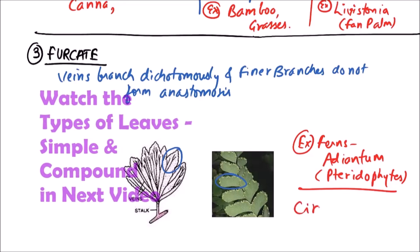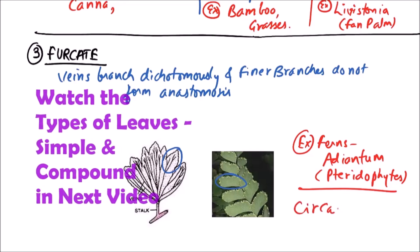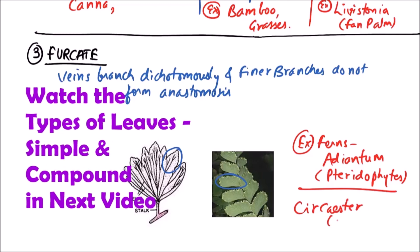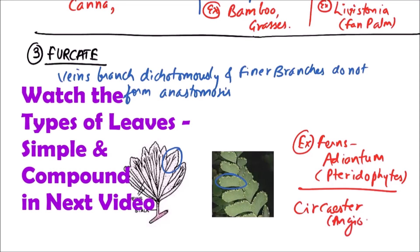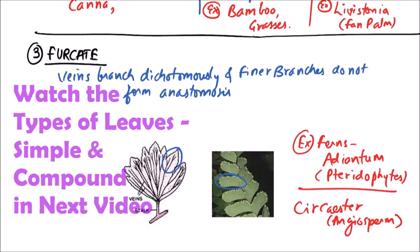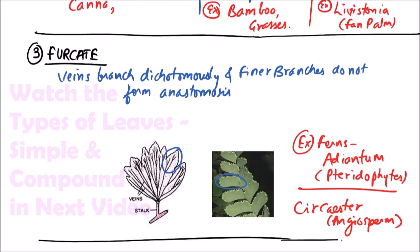Which include Circaster, this is angiosperm. So, these are the various types of venations.